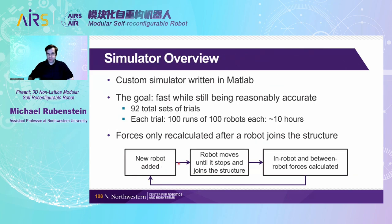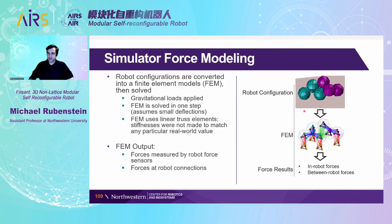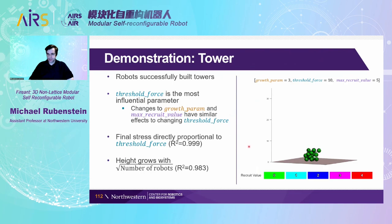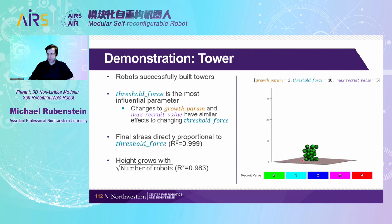We created a simulation in MATLAB to test this behavior quickly, using a finite element model to calculate stresses on the structure as it's built and have robots measure stress on their sensors. Here's an example: a light source at the top of the environment, and robots start one at a time, joining the structure and moving until they've been recruited or they reach the point closest to the light source. The colors represent stresses on the robots. Eventually a robot with high stress recruits others to join the structure to reduce that stress. Using this simple behavior, we get robots that build a tower toward a light source.